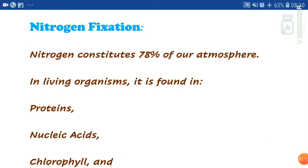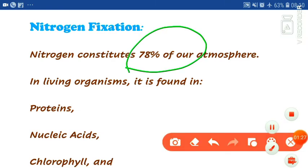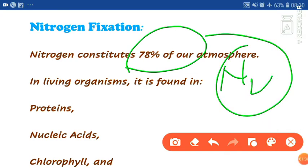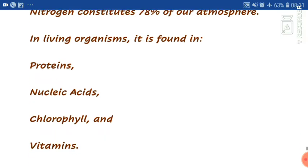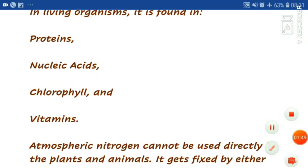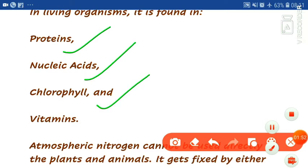Let's start today's topic: nitrogen cycle. First of all, we will understand nitrogen fixation. In the atmosphere, we all know that 78% nitrogen is present in the form of nitrogen gas. Nitrogen is present in the atmosphere in the form of nitrogen gas, and in plants and animals it may be present as protein, nucleic acid, chlorophyll, and vitamins.